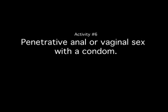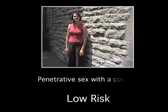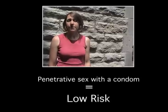Activity number six: penetrative anal or vaginal sex with a condom. Is this a low risk activity, an activity that poses no real risk, or a high risk activity for HIV transmission? This is a low risk activity. Using a barrier during a high risk activity brings it down to a low risk activity. Protected vaginal or anal sex is only a risk if the condom breaks or slips off. An intact polyurethane or latex condom will not let HIV pass through.